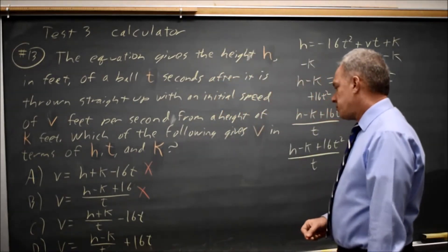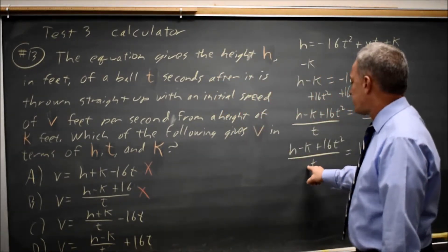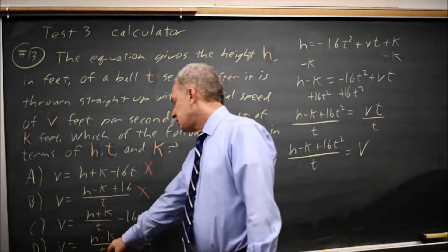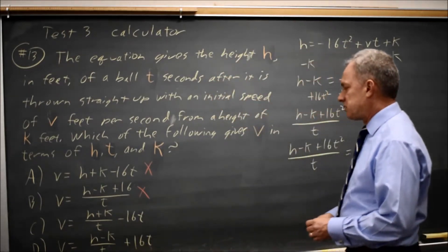The real question, when we simplify this, will this be h minus k over t like choice d or h plus k over t like choice c?